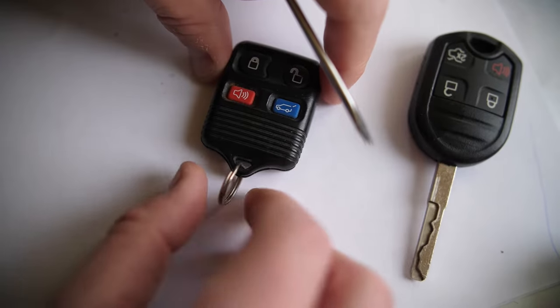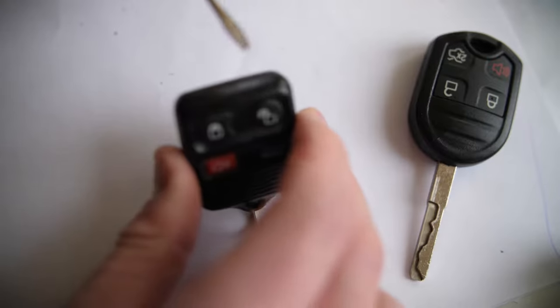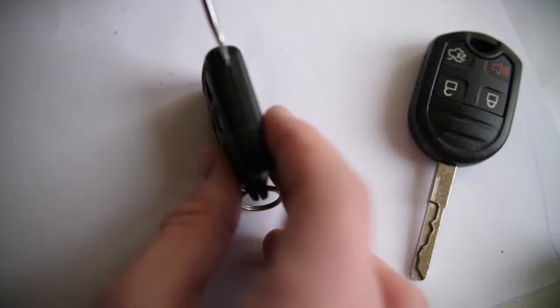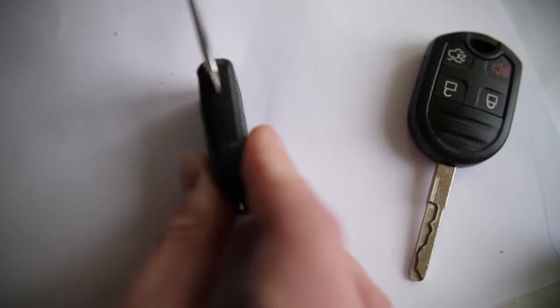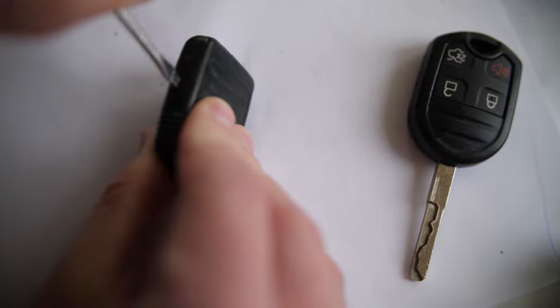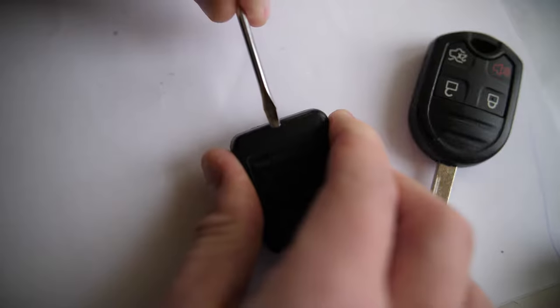Or an older fob like this doesn't have a key on it—same thing, kind of score around the edges here. And then you can get in with your little flathead screwdriver and just kind of slowly pry this key apart.